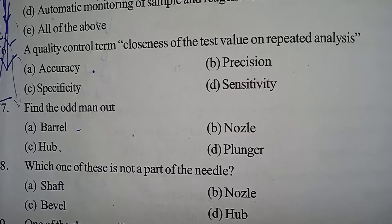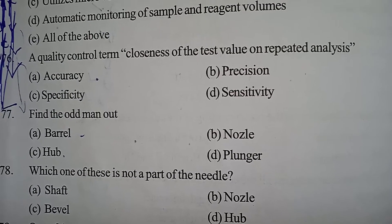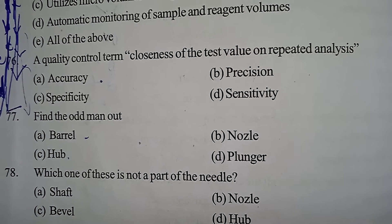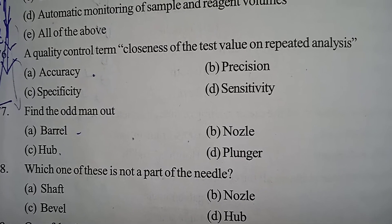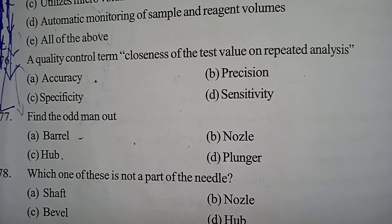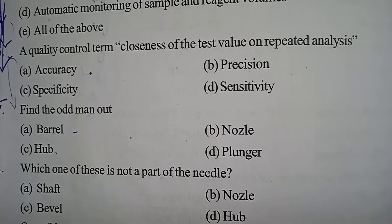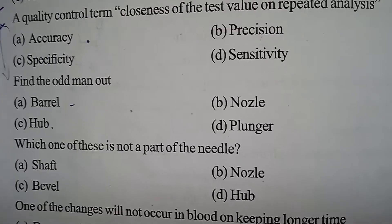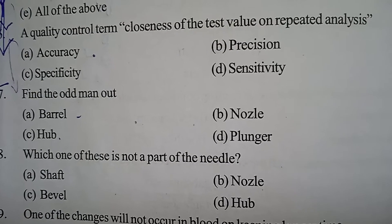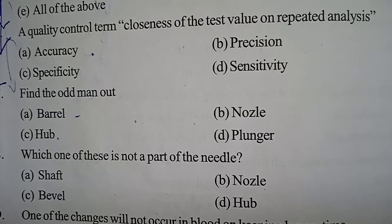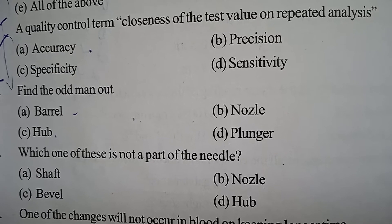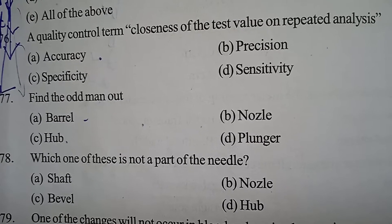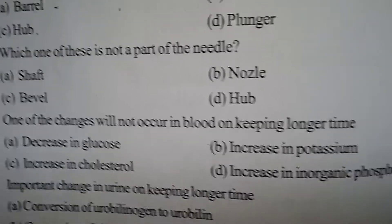Next question: Find the odd man out. Option A: barrel. Option B: nozzle. Option C: hub. Option D: plunger. Correct answer: Option C, hub. Options A, B, and D — barrel, nozzle, and plunger — are parts of a syringe.